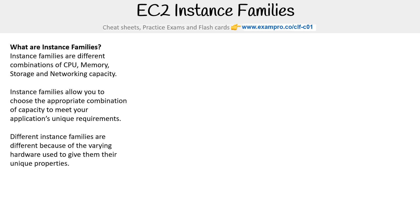We do talk about capacity reservation, where AWS can actually run out of a particular type of instance family because they just don't have enough hardware in that data center. So you have to reserve it. But let's go through the different types of instance families.